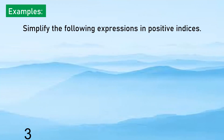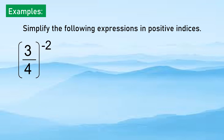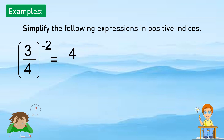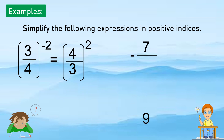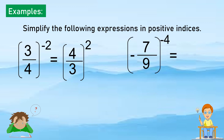More examples: (3 over 4) raised to negative 2 — we flip 3 over 4 to get 4 over 3, then raise to positive 2. For (negative 7 over 9) raised to negative 4, we get the reciprocal of negative 7 over 9, which is negative 9 over 7, then raised to positive 4.